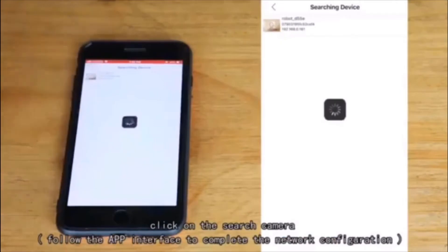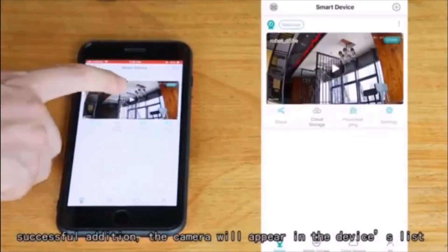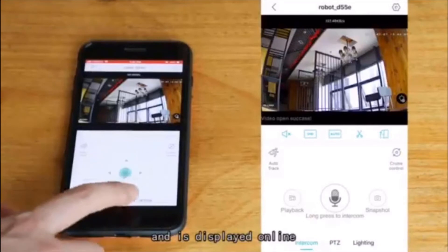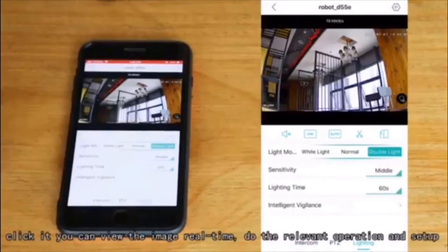Click on the search camera. Successful addition, the camera will appear in the devices list and is displayed online. Click it, you can view the image real time, do the relevant operation and setup.